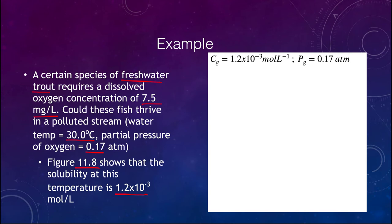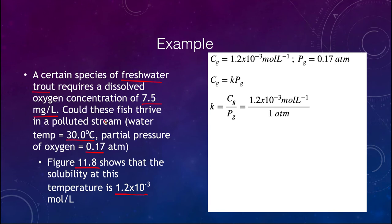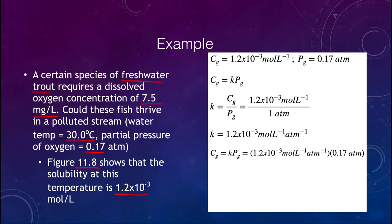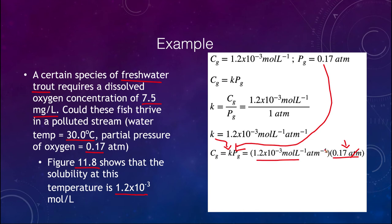We now have enough information to solve this. Using Henry's Law, we first find k. At this temperature the solubility is 1.2 × 10⁻³ mol/L at 1 atm, giving k = 1.2 × 10⁻³. We then use that k with the given partial pressure of 0.17 atm. Multiplying those two, the atmospheres cancel and we get a solubility of 2.0 × 10⁻⁴ mol/L.